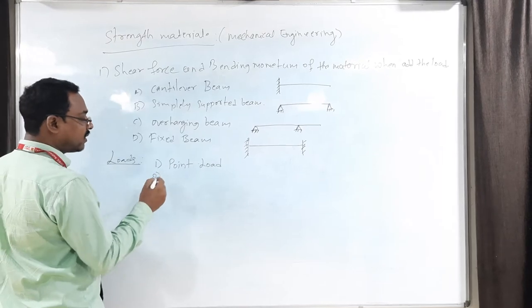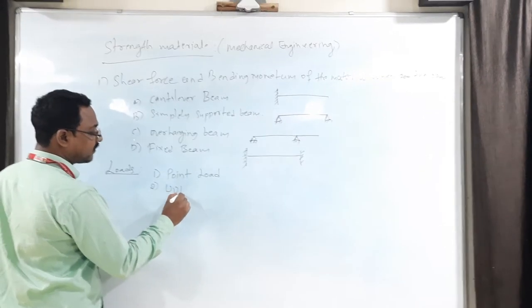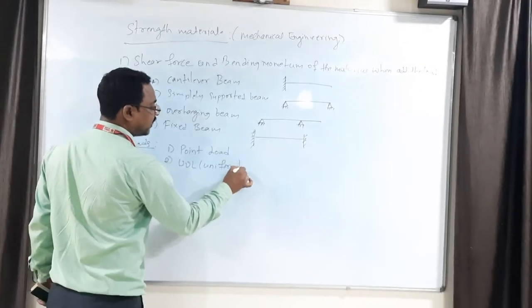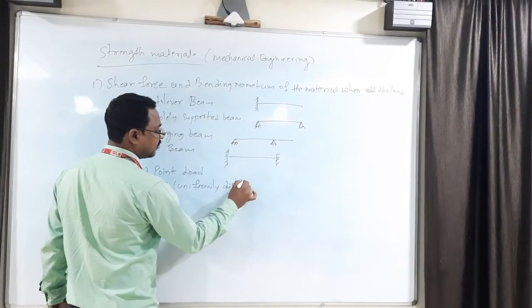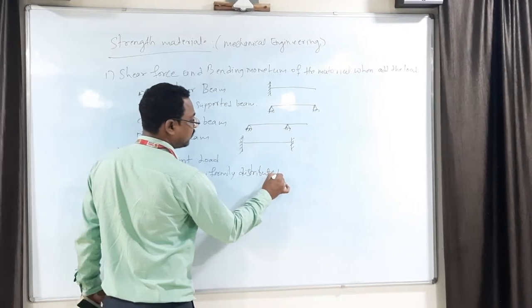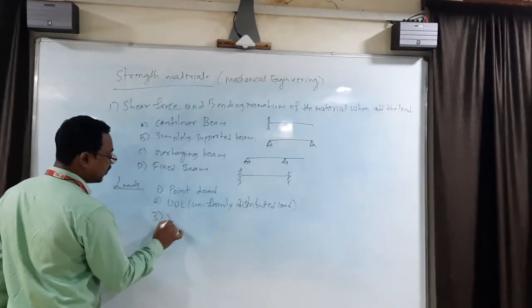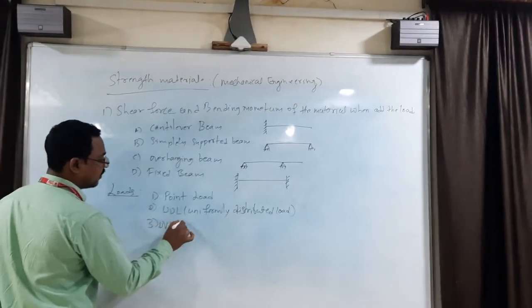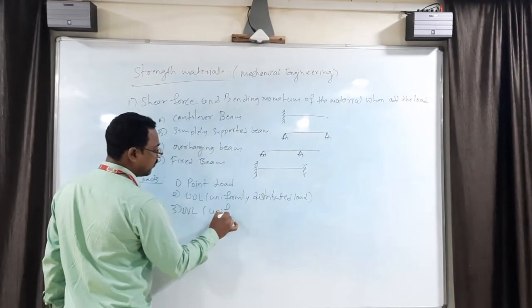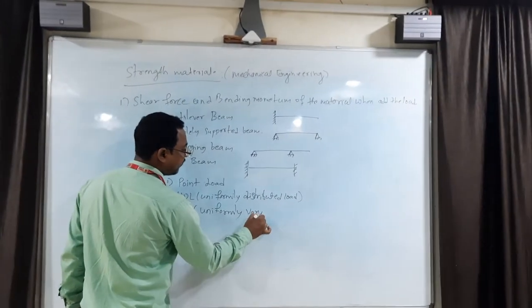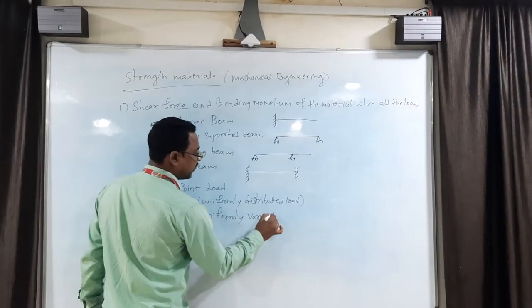Point or concentrated load. Second one is called UDL or Uniformly Distributed Load. Third one we call as UVL, Uniformly Varying Load.